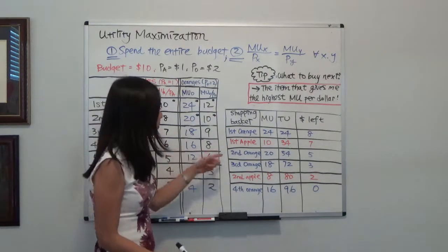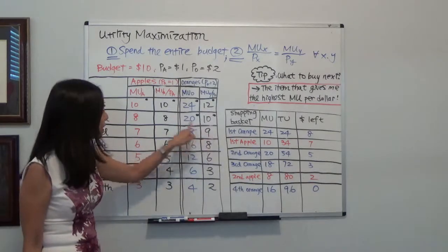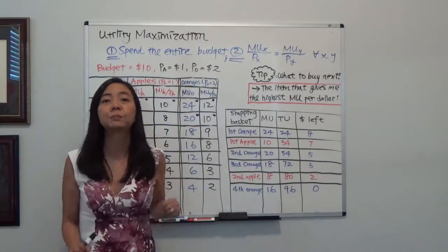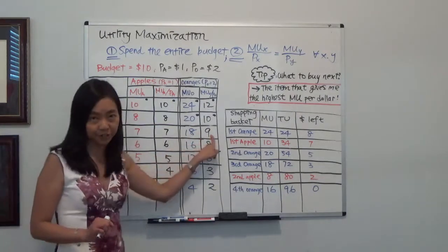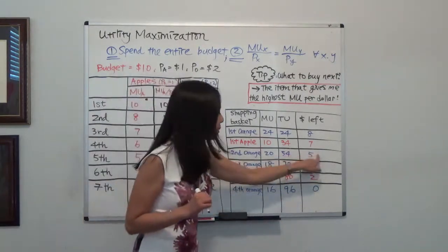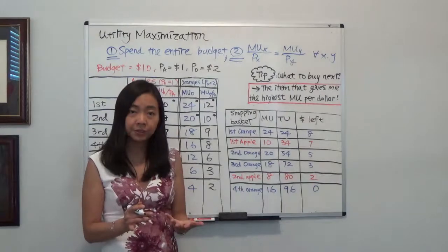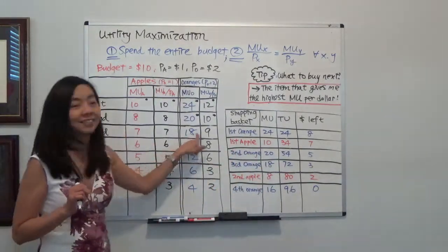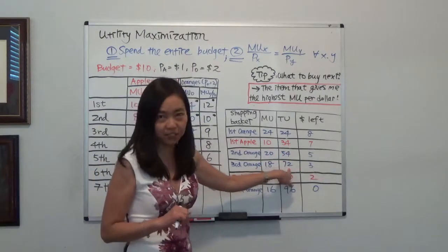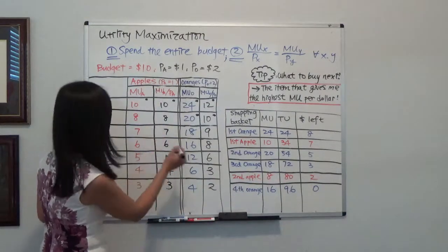Now what do I buy next — the third orange or the second apple? The third orange's marginal utility per dollar is 9, which is higher than the second apple's 8. So I put the third orange in my basket. One orange costs $2, so 5 minus 2 gives me $3 left. The marginal utility of the third orange is 18, so my total utility is 54 + 18 = 72.